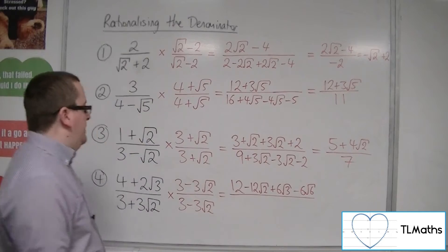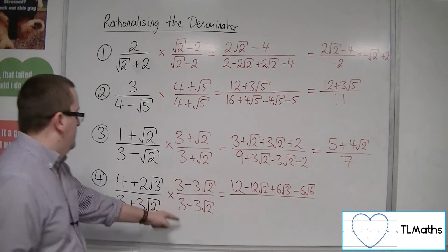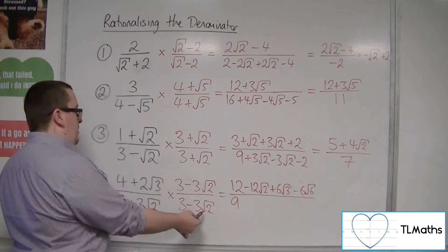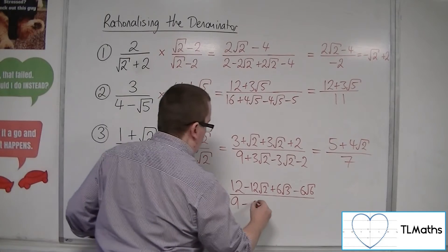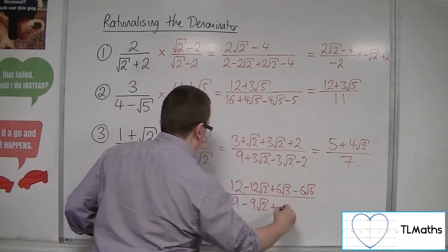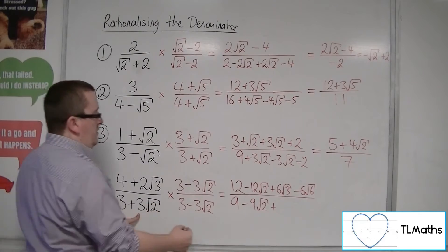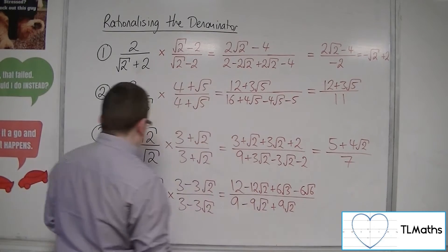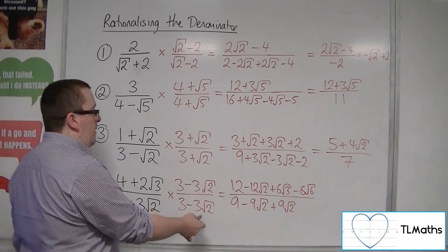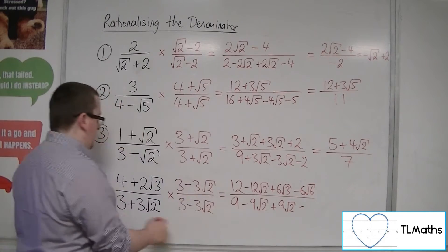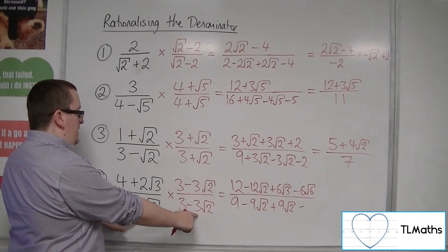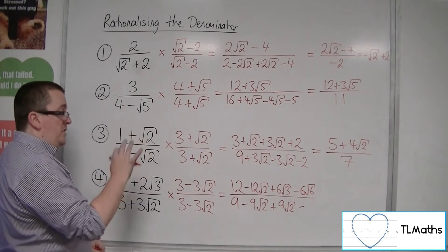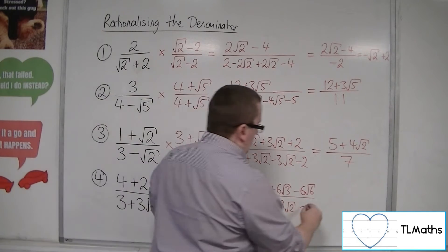In the denominator: 3 times 3 is 9, then 3 times minus 3 root 2 is minus 9 root 2, then 3 root 2 times 3 is plus 9 root 2, and 3 root 2 times minus 3 root 2 — take away — 3 times 3 is 9, root 2 times root 2 is 2, so 9 times 2 is 18, meaning take away 18.